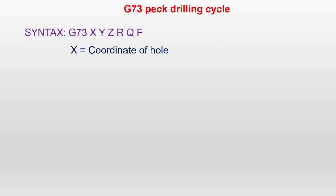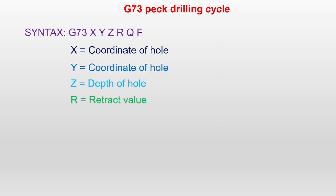X is the X coordinate of the hole and Y is the Y coordinate of the hole. Z is the depth of the hole. R is the retract value — the drill does not continuously go inside; it goes in, comes back, goes in, and comes back. R specifies how much the drill bit will lift. Q is the depth of each peck — how far inside the workpiece the drill goes each time. F is the feed rate at which the drill bit goes inside.